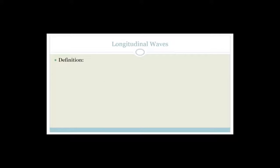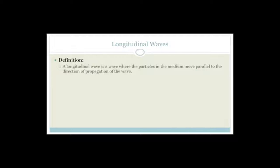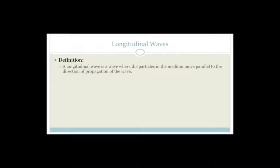Now we're going to talk about the longitudinal wave. The definition says: a longitudinal wave is a wave where the particles in the medium move parallel to the direction of propagation of the wave. Remember, in transverse waves the particles moved up and down while the wave moved from left to right. Now in a longitudinal wave, the particles in the medium move parallel.